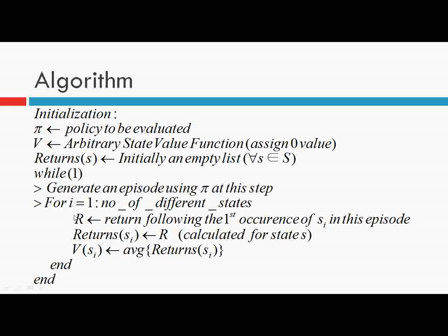Once initialization is complete, we repeat a loop — ideally infinite times, but practically 10,000 or a million times for a good approximation. The first step inside the loop is to generate an episode using the stored policy pi. In general path planning, an episode is a robot moving from a starting location to a target location through an environment with obstacles. Once the robot safely reaches the target location, the episode ends. We can have the robot do this 10,000 times to generate 10,000 different episodes. The first task inside the loop is to generate such an episode.